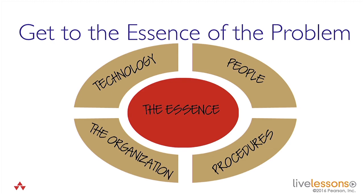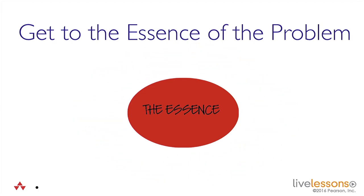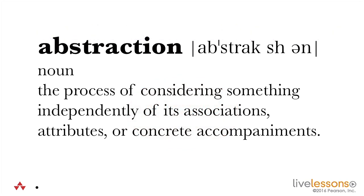And that's what we're trying to reveal. What I've got to do is to see the essence without the technology — to scrape all that stuff off and see it without its concrete accompaniment. The definition of abstraction talks about the process of considering something independently of its associations, attributes or concrete accompaniment, or, to put it in our language, to see it without any technology or any solution attached to it. So in order to see the essence, I've got to make some abstractions.